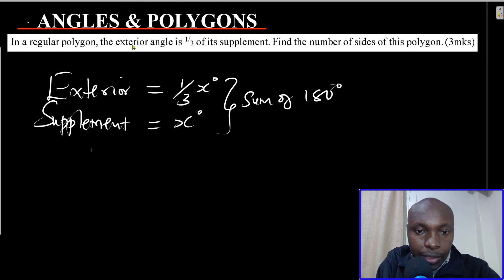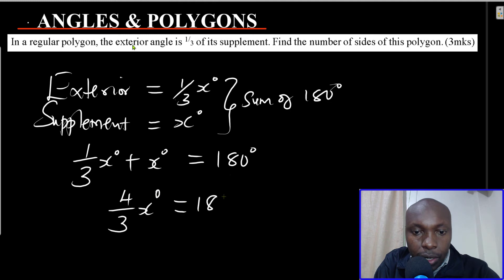Now having this concept, you can add a third x degrees plus x degrees. This should give 180 degrees. Adding a third x plus x, you get 4 thirds x degrees, which gives 180.